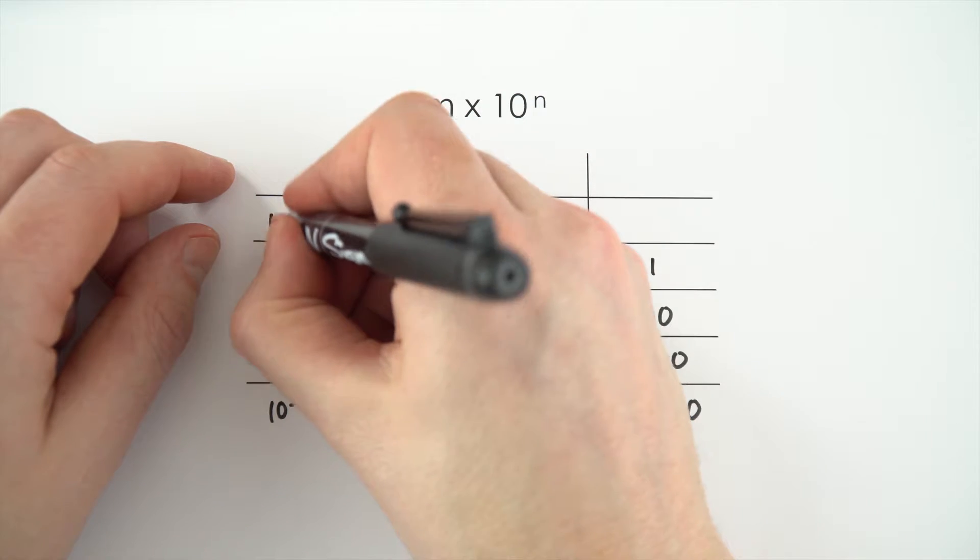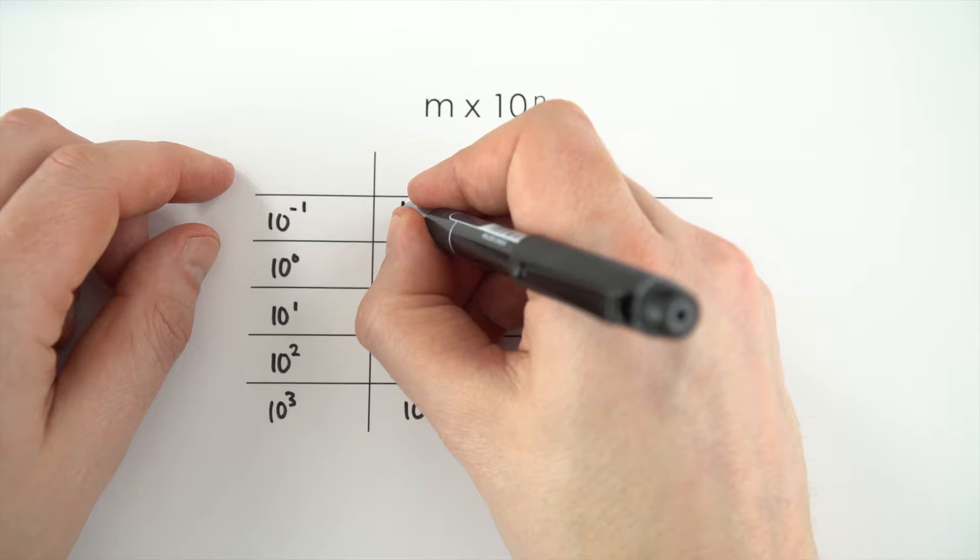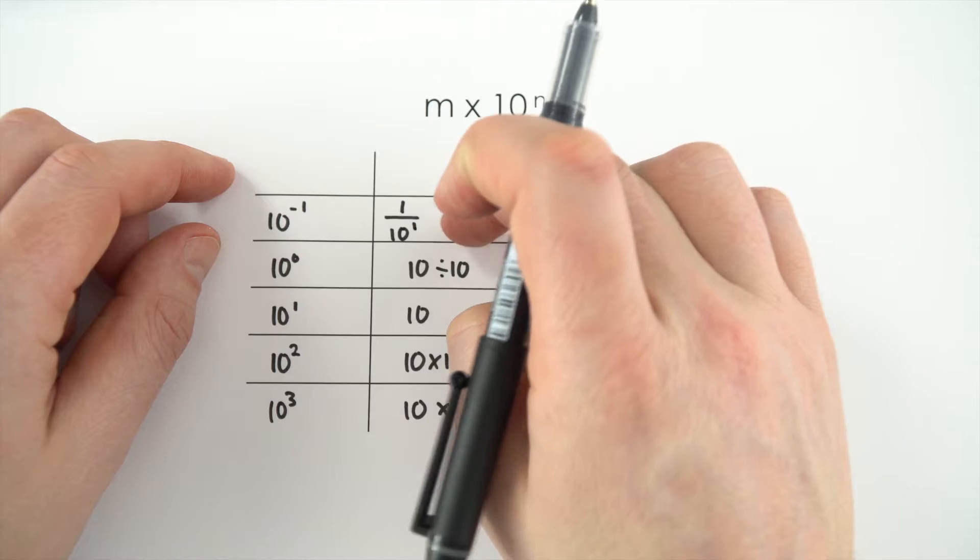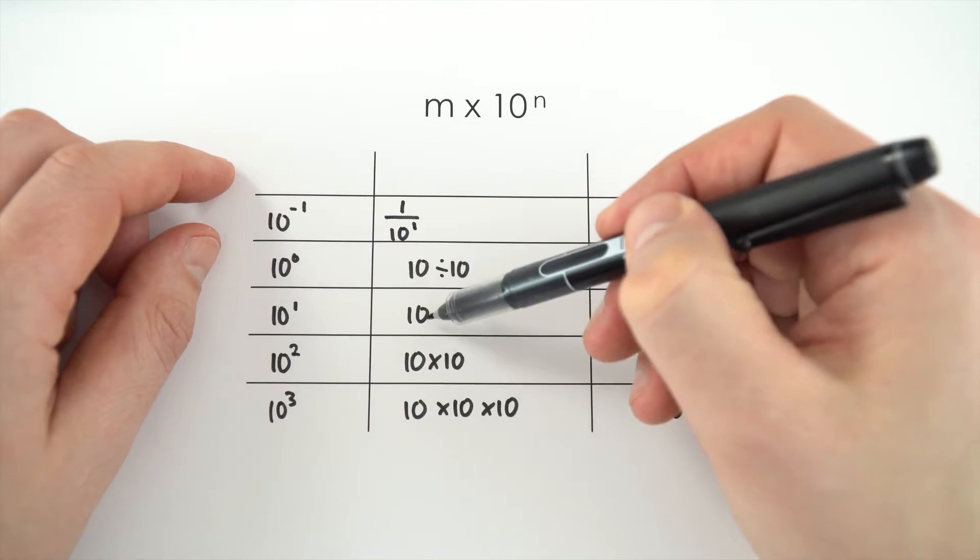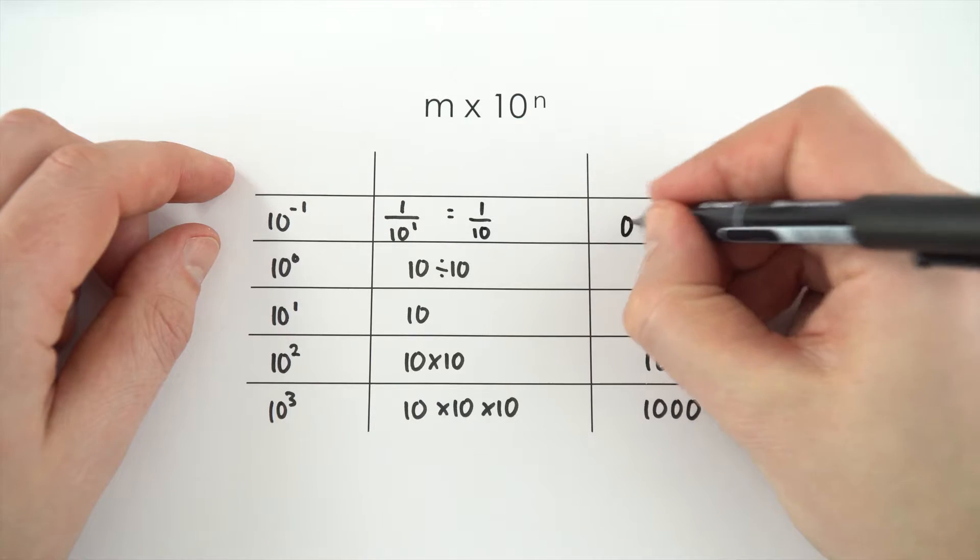If we go back another stage, we've got 10 to the minus 1. Now, 10 to the minus 1 is the same as 1 over 10 to the 1. It's just something you might find out a little bit more when you do your maths. Now, 10 to the 1 is 10, so that means this is the same as 1 over 10, which is 0.1.